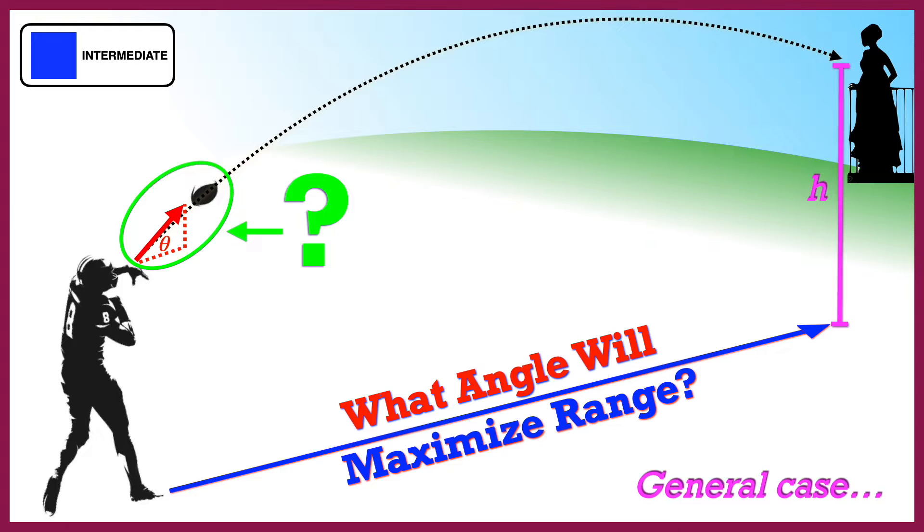In a previous video we looked at the case where the ball was caught and thrown at the same height and found that that angle was 45 degrees, assuming you ignore air resistance. In this video we'll be taking a look at the more general case where the receiver is at any height relative to the thrower.